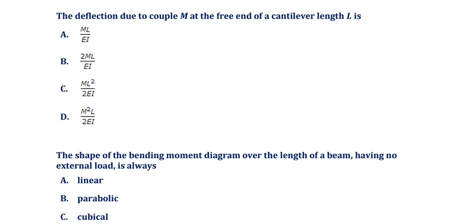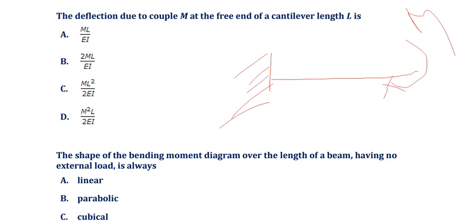The deflection due to a couple moment M at the free end of a cantilever of length L. The moment is applied at the free end, and the deflection is asked. The answer is ML² divided by 2EI — option C is the correct answer.